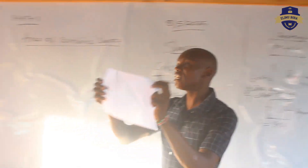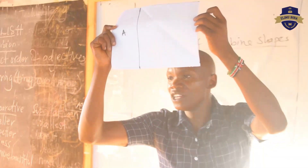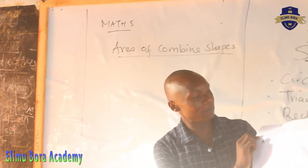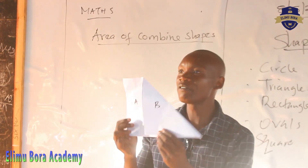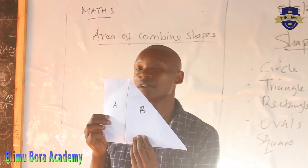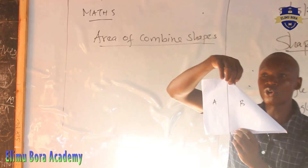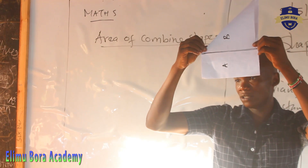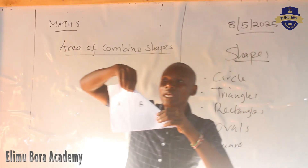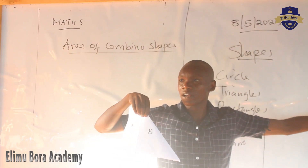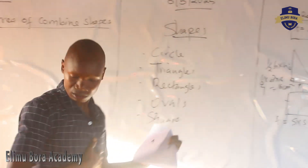Let's look at this. What is the shape of this paper? This paper, the shape is a triangle. If I fold it, it forms two shapes. We have got shape A and shape B. Shape A is a rectangle, what you did in grade 5. And shape B is a triangle, what you did in grade 5. Now, in this class, it is now combined.